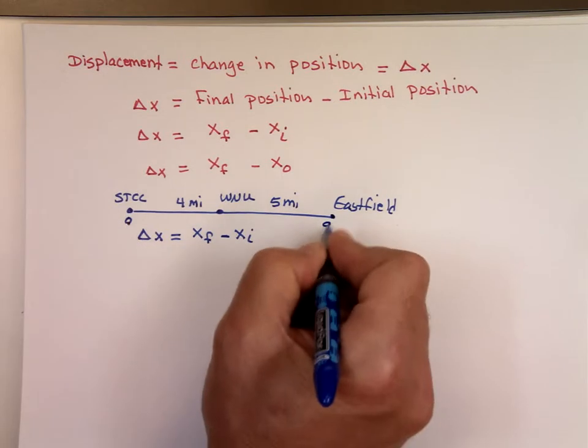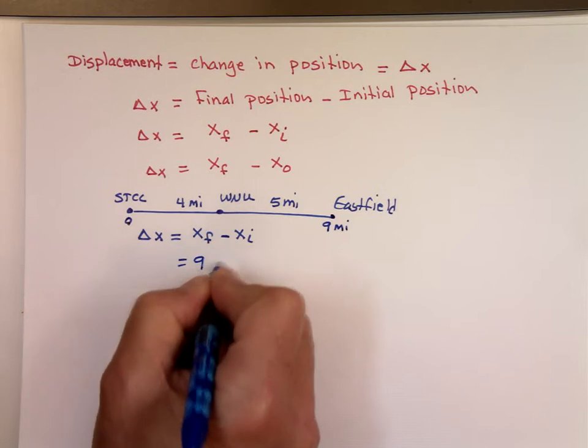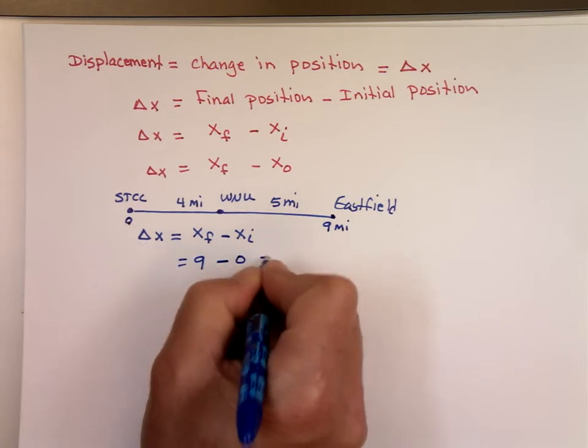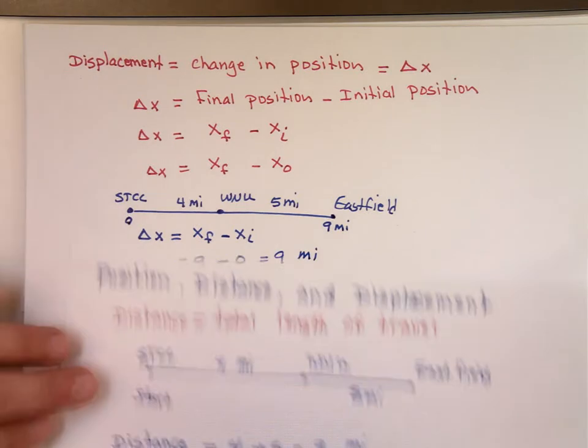Nine miles, right? So it's going to be nine minus the zero, which is nine miles. Notice, displacement and distance in this example are the same.